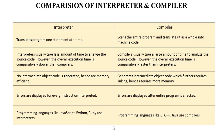In the compiler, the program need not be compiled every time once the higher-level program is converted into a lower-level program. In the interpreter, errors are displayed for every instruction interpreted, if any. In the compiler, errors are displayed after the entire program is checked. That is why the execution time of the interpreter is more and the execution time of the compiler is less. Programming languages like C, C++, and Java use a compiler. Programming languages like JavaScript, Python, and Ruby use an interpreter.